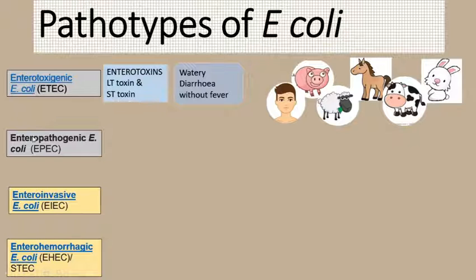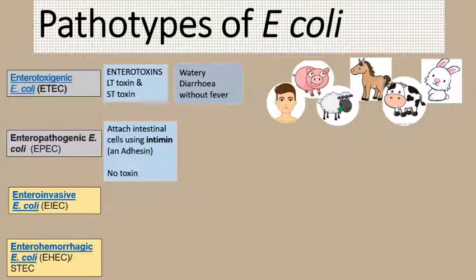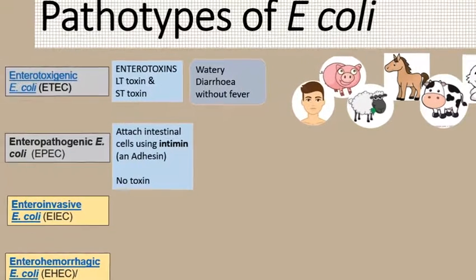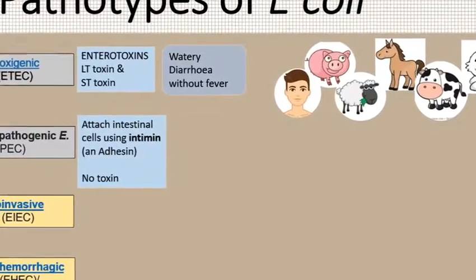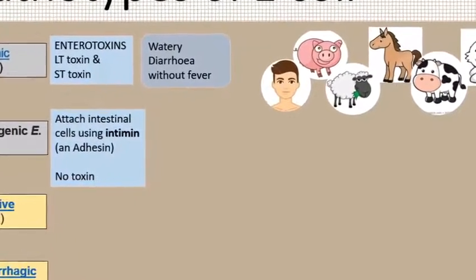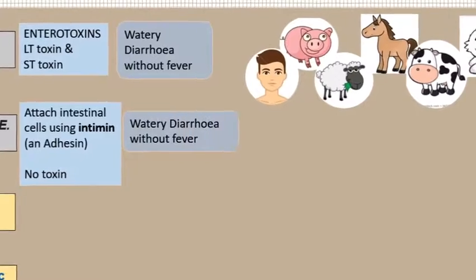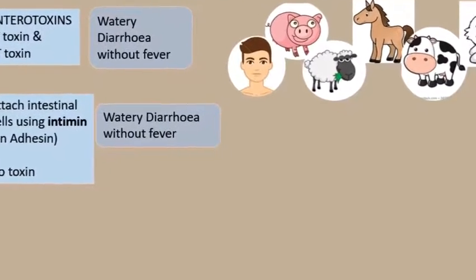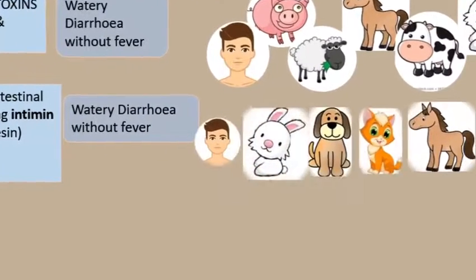The second one is enteropathogenic E. coli (EPEC). Enteropathogenic means it is not producing any toxins. Instead, it causes lesions by attaching to the intestinal epithelium using an adhesin protein called intimin. They do not produce any toxins, and they cause watery diarrhea without any fever, affecting many species including humans.